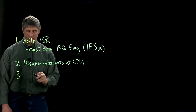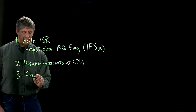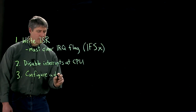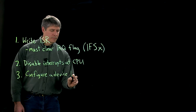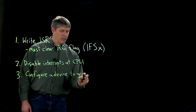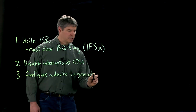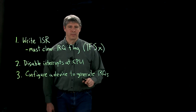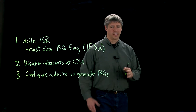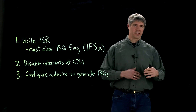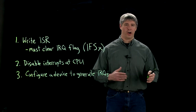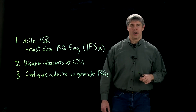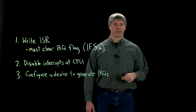The third step is to configure some device to generate interrupts. For example, our alarm sensor — it might be a digital input — and you're going to configure it so that when that input changes from zero to one or one to zero, it should create an IRQ to call an interrupt service routine.